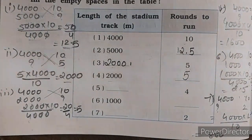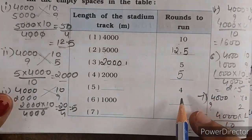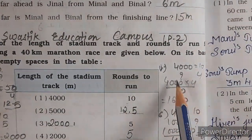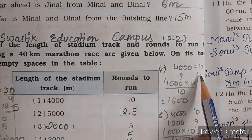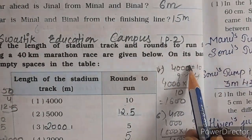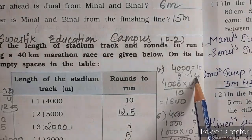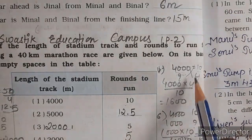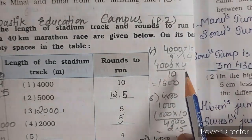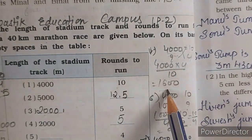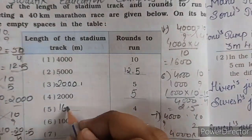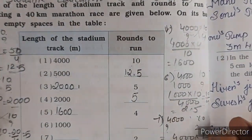Question number 5 mein aapko batana hai ki 4 rounds mein kitna distance cover hoga. So 4000 ke liye 10 rounds, to 4 rounds ke liye kitna distance? Cross multiplication — 4000 into 4 divided by 10. 400 into 4 equals 1600. So yahan aapko likhna hai 1600 meter.